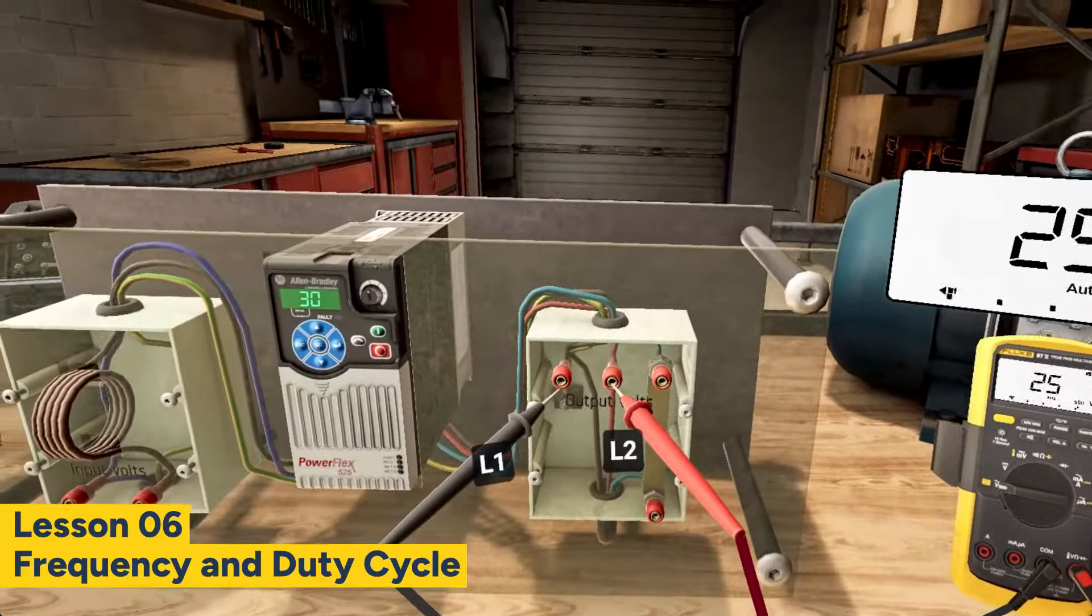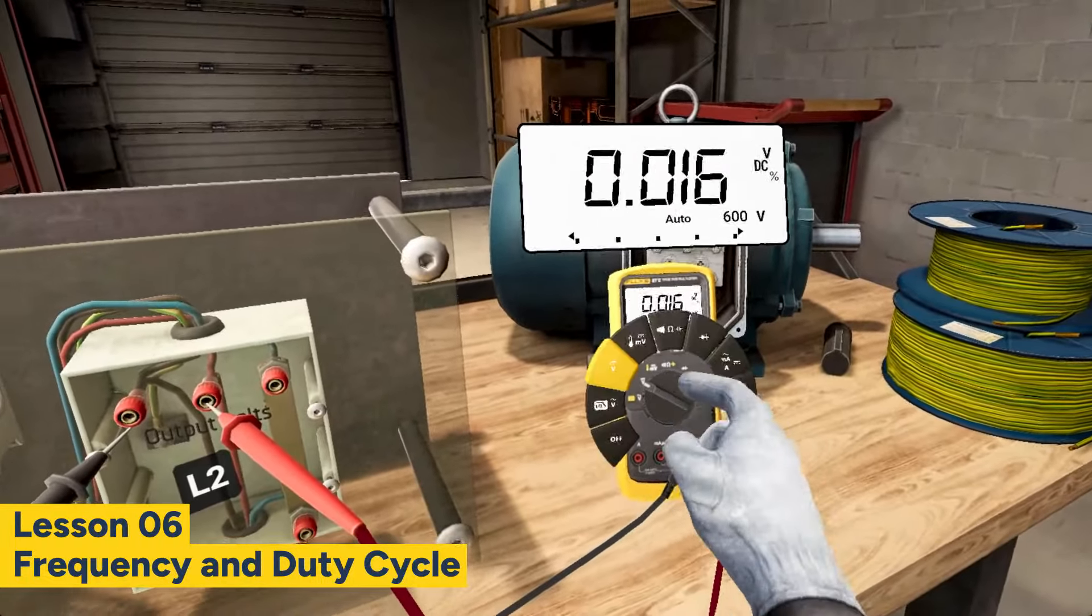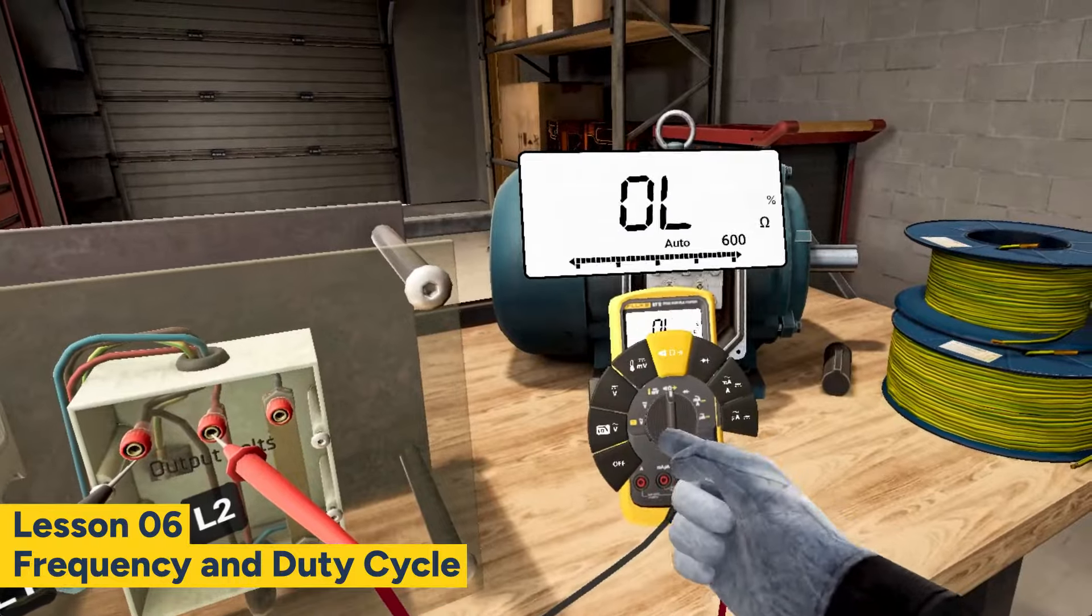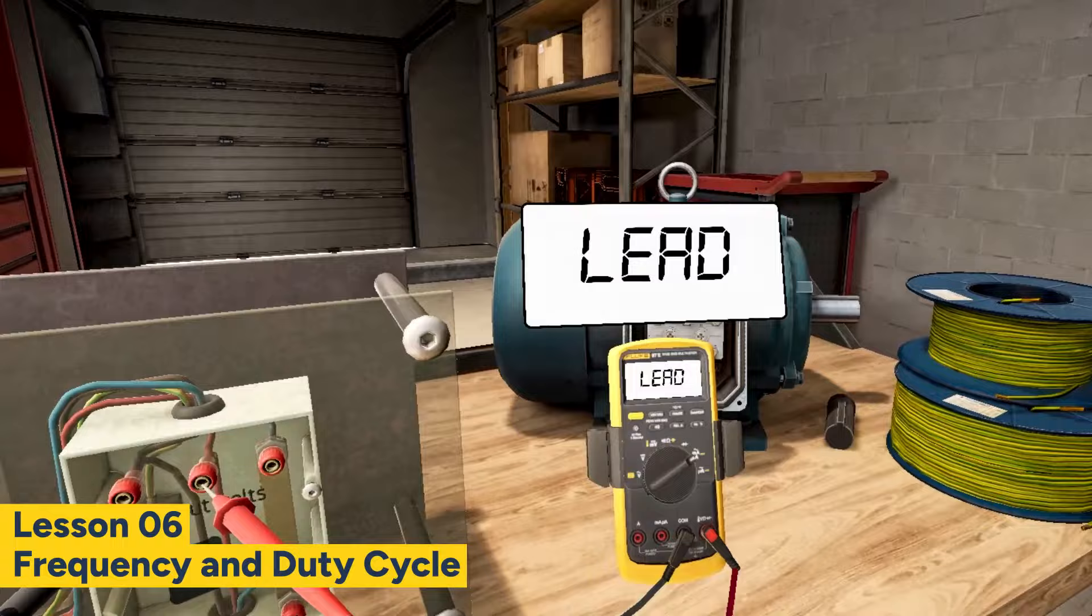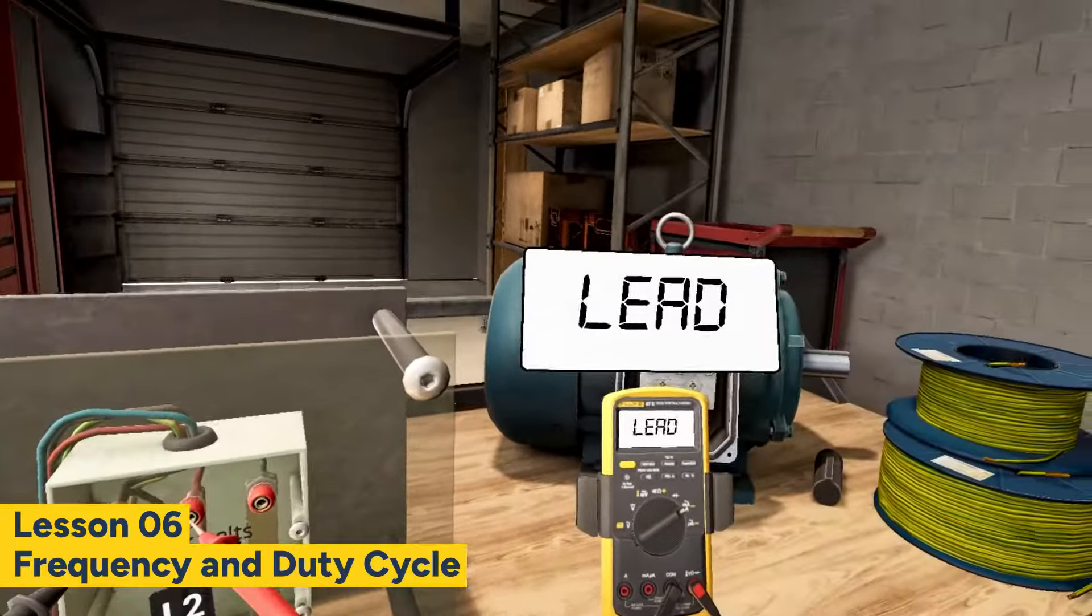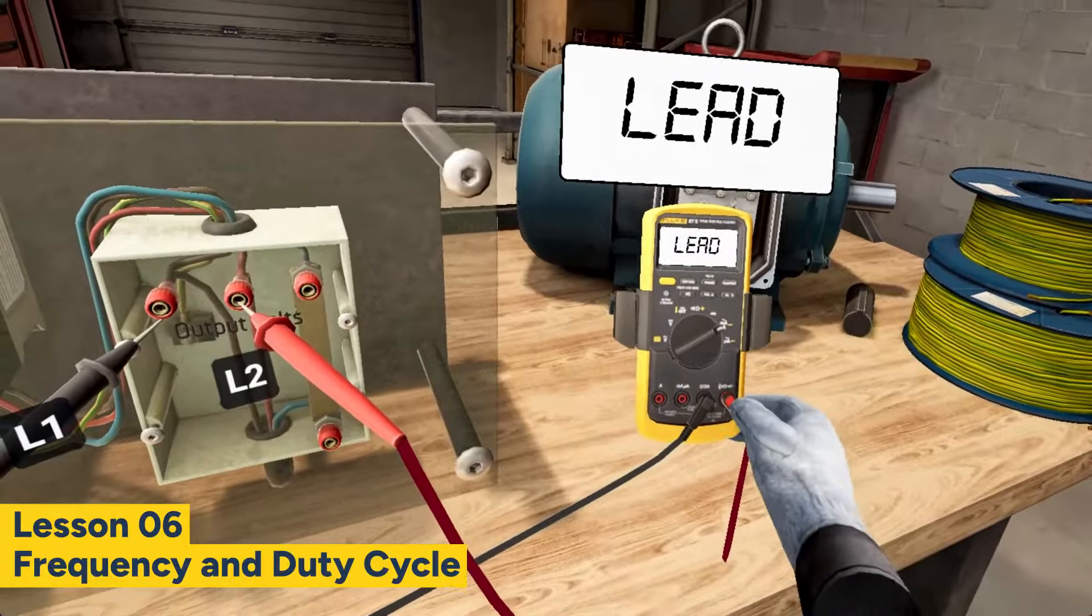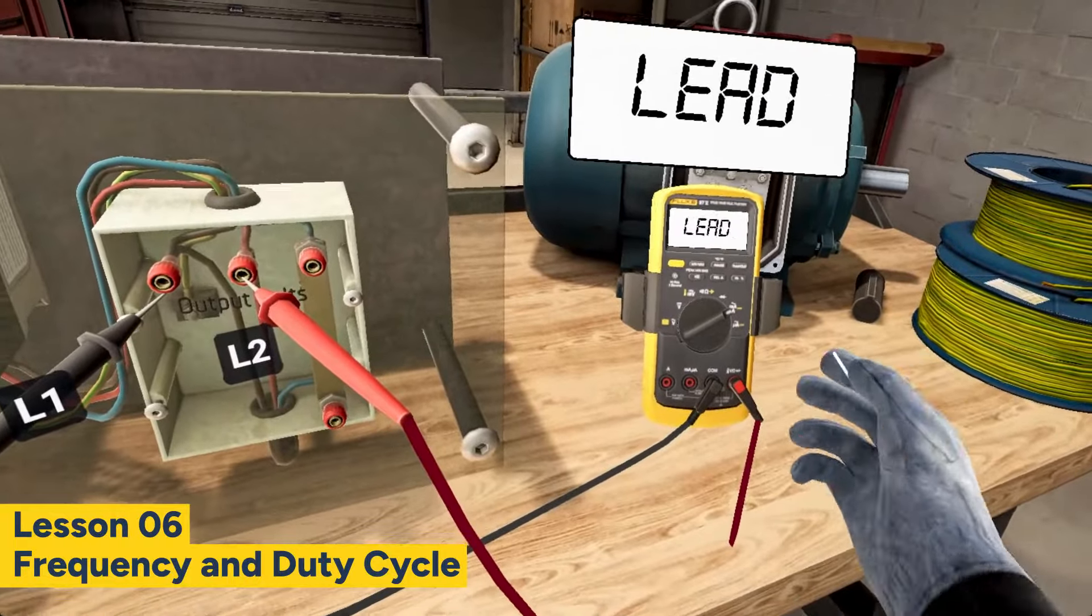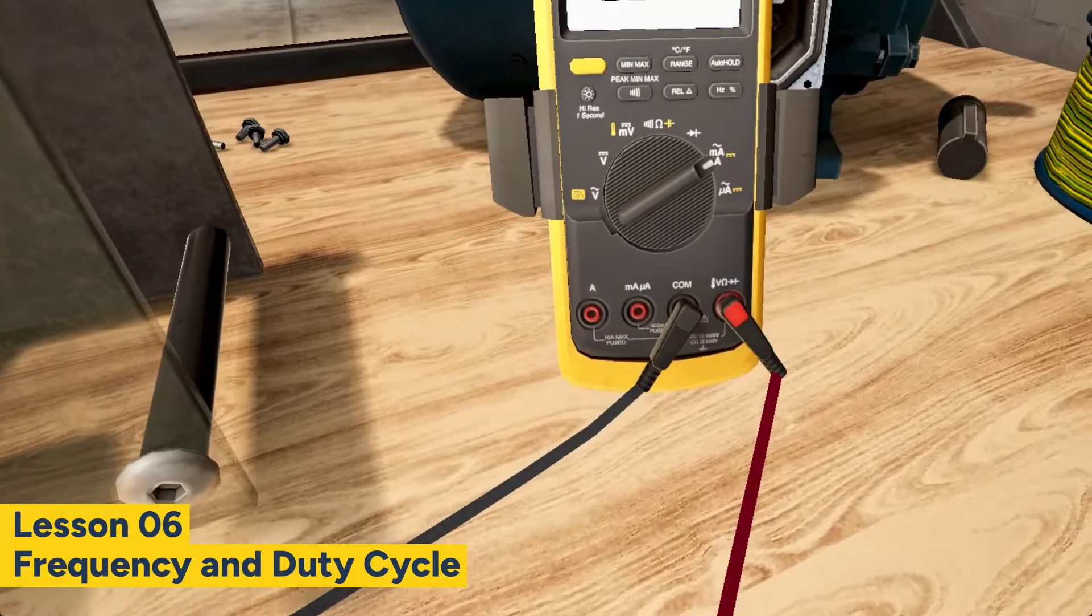But first, let's set the multimeter to the amps function. Connect the test leads to the corresponding input jacks. A black test lead to the comm jack, and a red test lead to the amps jack. Notice that the multimeter has two amp input jacks. They have different range and different fuses protecting them.